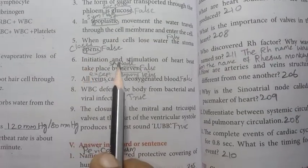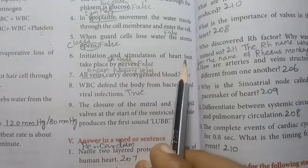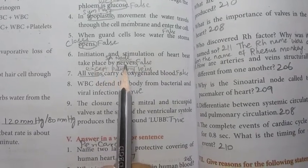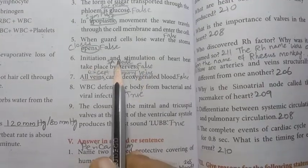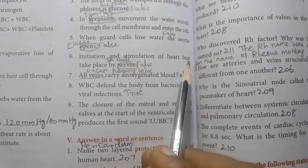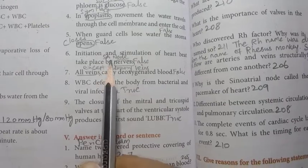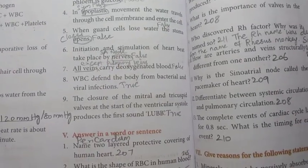Number six: initiation and stimulation of heartbeat take place by SA node.